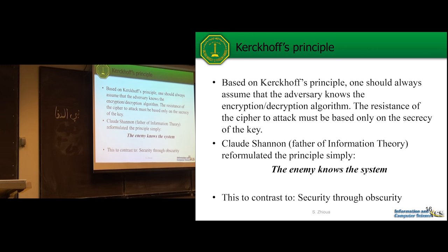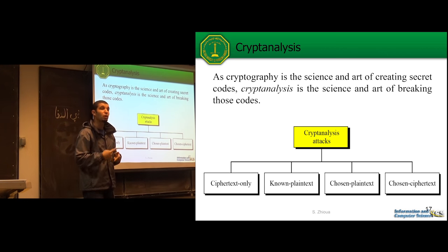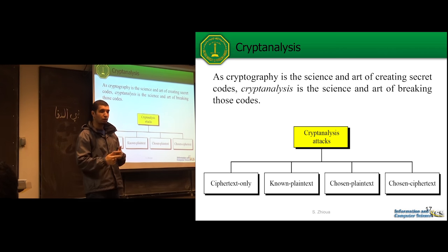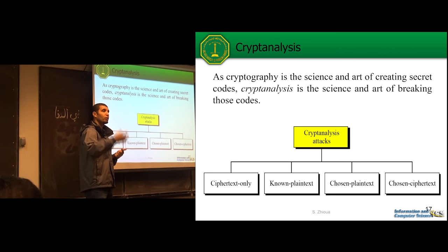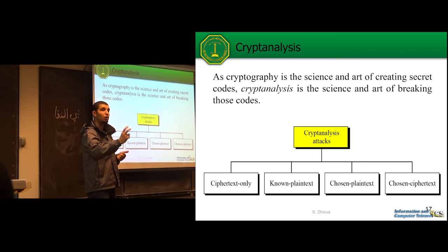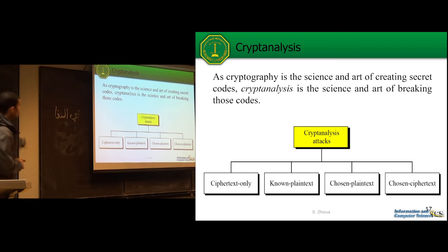Security through obscurity means hiding the implementation and relying on keeping it secret. Cryptanalysis is the opposite of cryptography — cryptography encrypts data to make it unusable by observers, while cryptanalysis takes ciphertext and tries to retrieve the plain text. Cryptanalysis is the science of breaking cryptography.